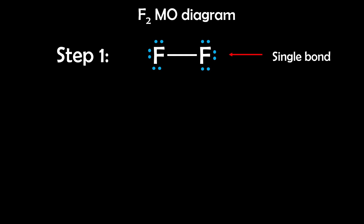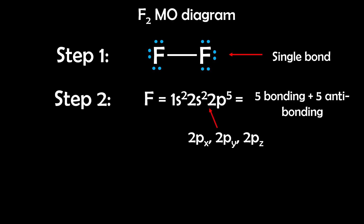Let's move on to our next example: F₂, or fluorine gas. Step 1: Draw the Lewis structure — it's just a single bond between two fluorine atoms. Step 2: Electron configuration. Each fluorine is 1s², 2s², 2p⁵, giving us one 1s orbital, one 2s orbital, and three 2p orbitals for each atom. In total, we're dealing with 10 molecular orbitals — 5 bonding and 5 antibonding.